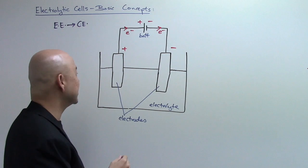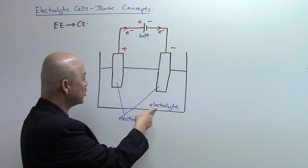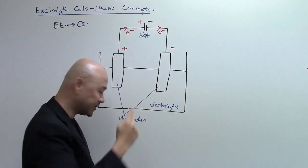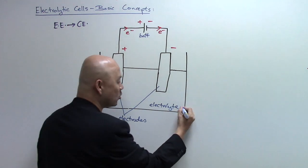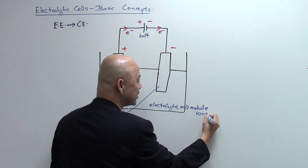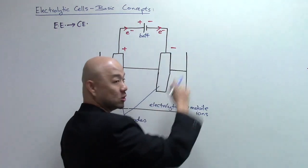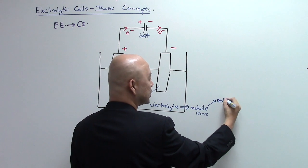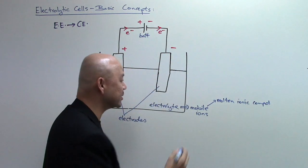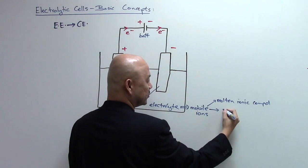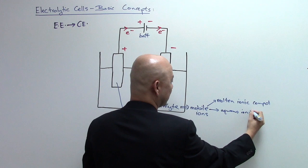Ions from the electrolyte are attracted to the two terminals, which are charged positive and negative. Electrolytes must contain mobile ions. Common electrolytes that provide mobile ions to close the circuit include molten ionic compounds — that is, ionic salts in the liquid state — or aqueous ionic compounds, which are ionic compounds dissolved in water where the ions are dissociated from the salt.